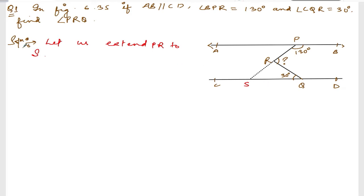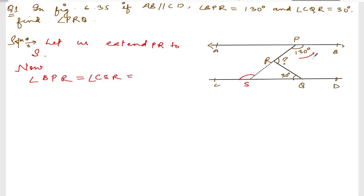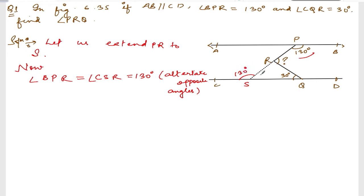After extending PR to S, angle BPR equals angle CSR because they are alternate interior angles between the two parallel lines AB and CD. Since angle BPR is 130°, angle CSR is also 130°.